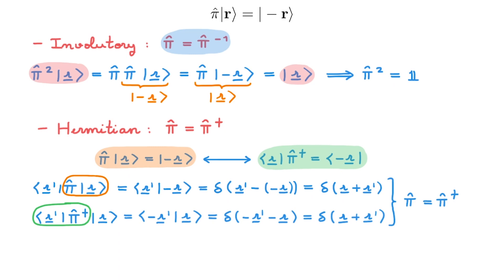The next property is that the parity operator is unitary, meaning that its inverse is equal to its adjoint. This follows trivially from the fact that the parity operator is both involuntary and Hermitian.